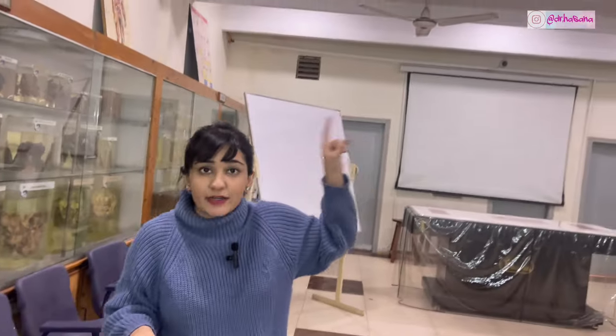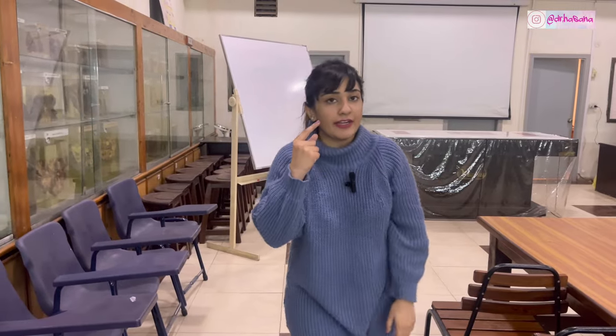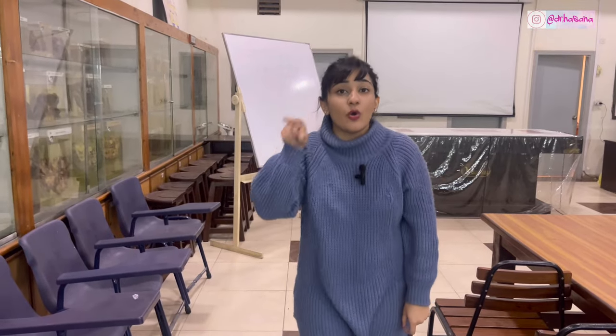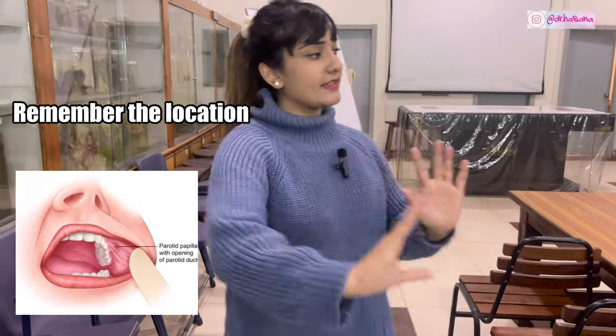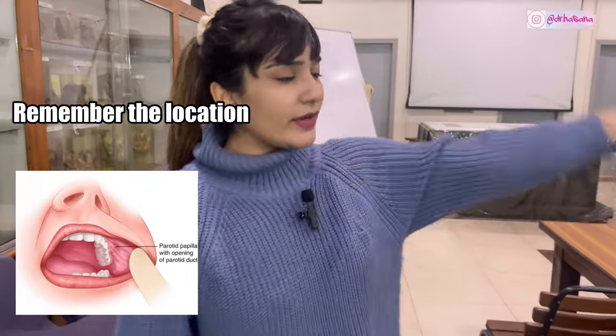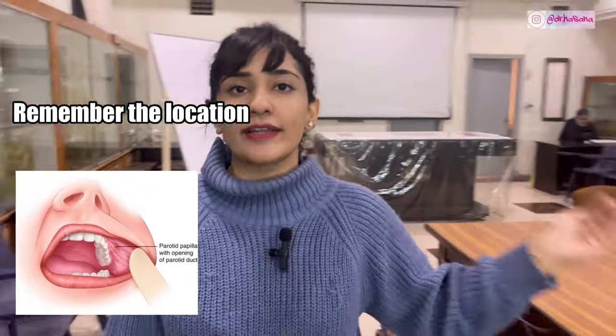One important part of the vestibule to remember: at the upper second molar tooth, in the gum in the vestibular area, is the opening of the parotid gland. Do not forget this. So overall, this is the vestibule. Now we're going to discuss the oral cavity proper.